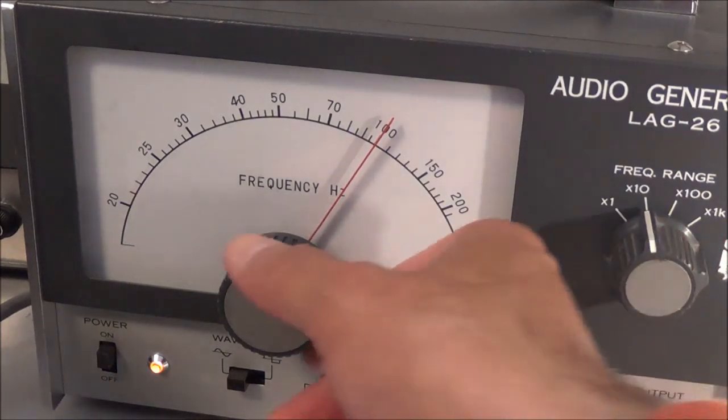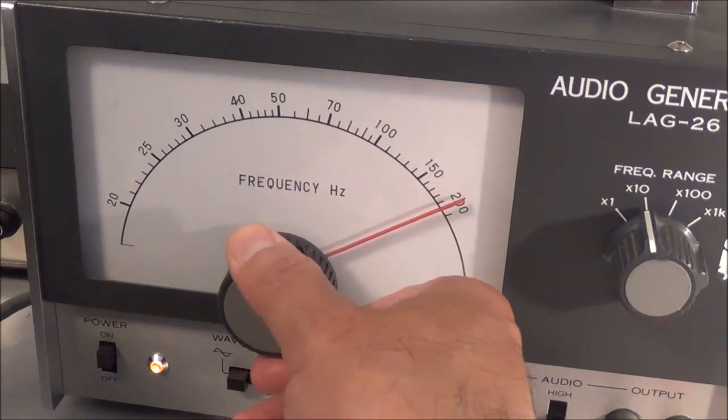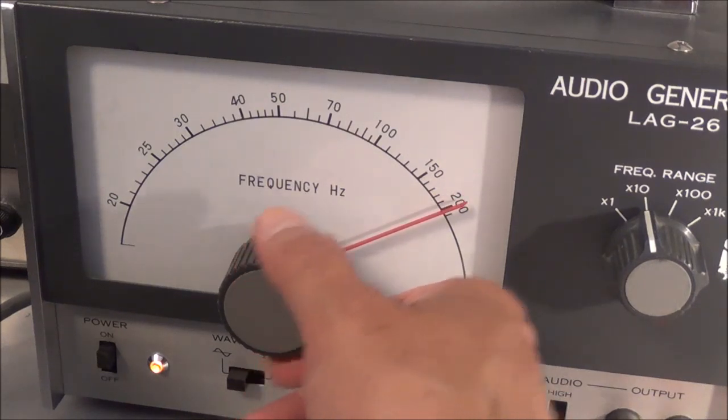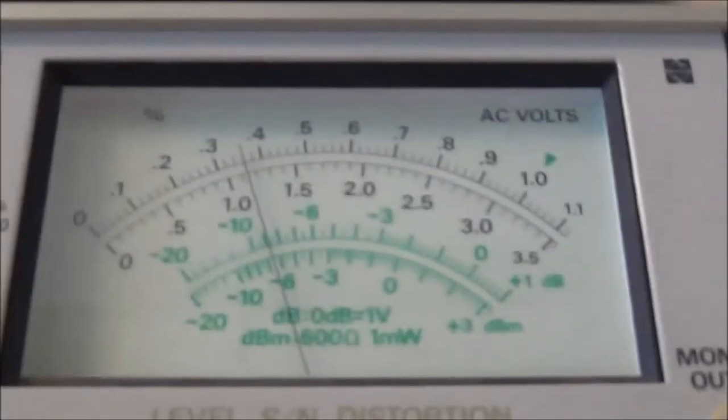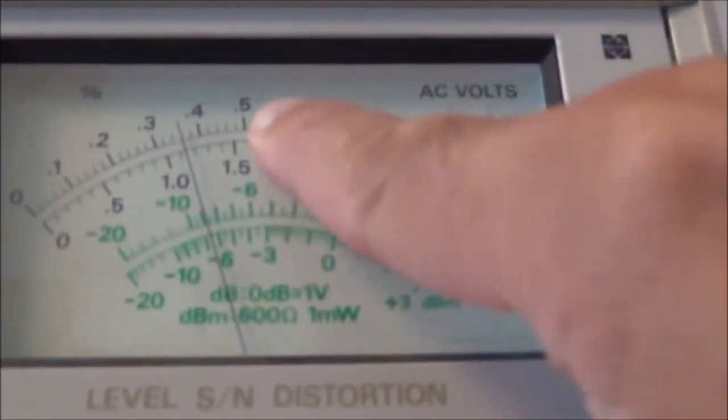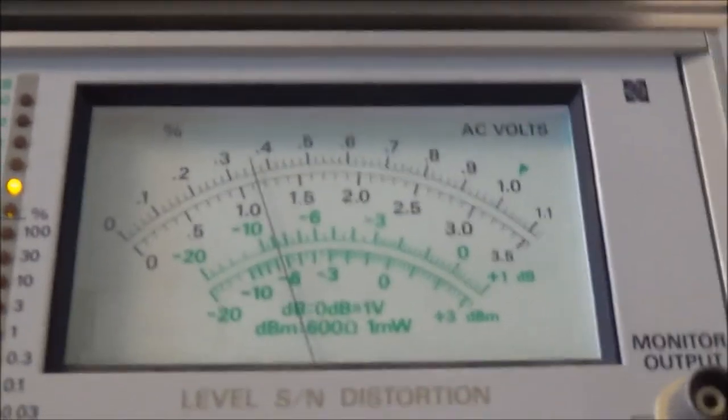So now I go ahead and I go to my next reading, which is gonna be at a frequency of 2000 hertz. And if you remember the RIAA curve, which goes downward as the frequency gets higher, now if I take a look at the voltmeter it should be going down.